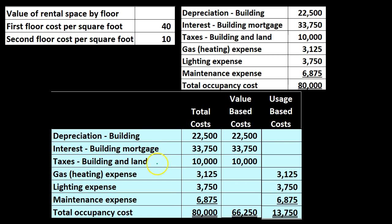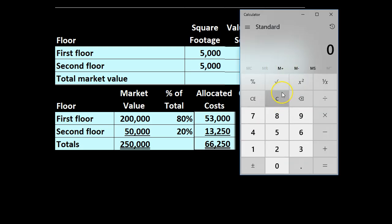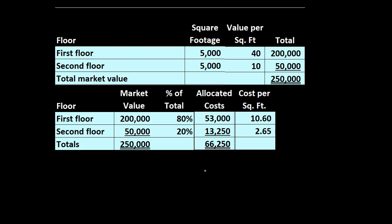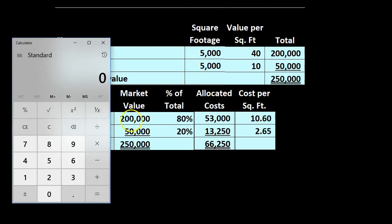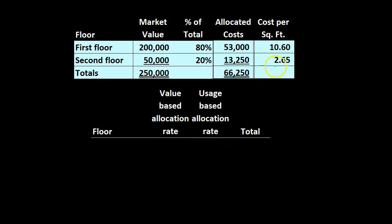We take the value-based costs — depreciation, interest, and taxes totaling $66,250 — and apply them on an 80/20 basis. First floor: $66,250 × 80% = $53,000. Second floor: $66,250 × 20% = $13,250. That adds up to $66,250. Since there are multiple departments per floor, we now need cost per square foot: $53,000 ÷ 5,000 sq ft = $10.60 for the first floor, and $13,250 ÷ 5,000 = $2.65 for the second floor.